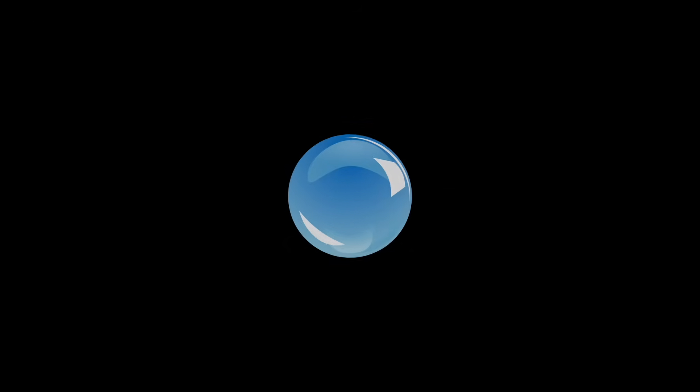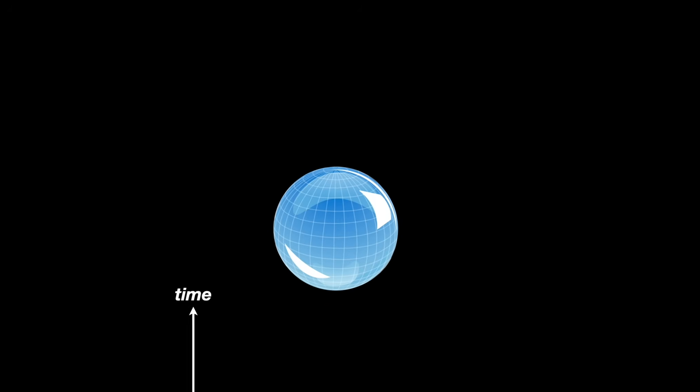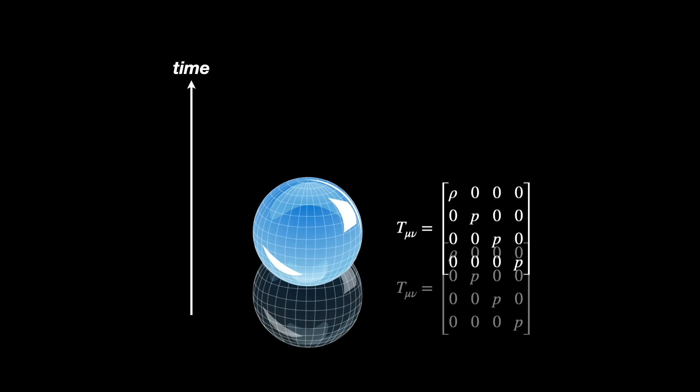As a concrete example, imagine a perfect fluid at rest. This is a volume of space that looks exactly the same everywhere and in every direction. There is no motion in space, but there is always motion in time.